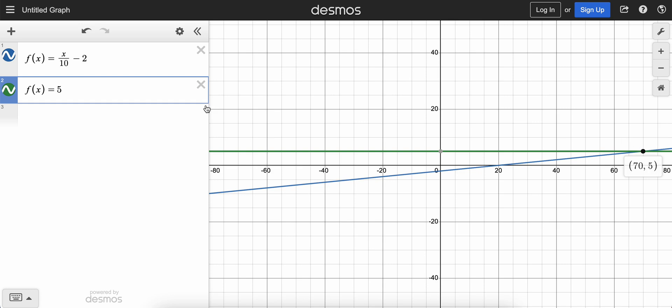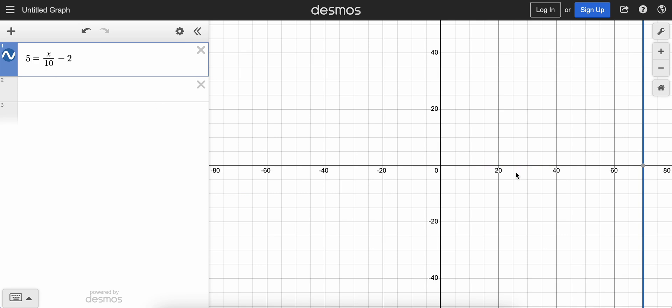Or because f of x equals 5, we could actually erase that. And in place of f of x up here, we can change that to 5 because they said f of x was 5. And either way, notice that we have a vertical line here, but it's still through that point 70. So 70 would be the answer.